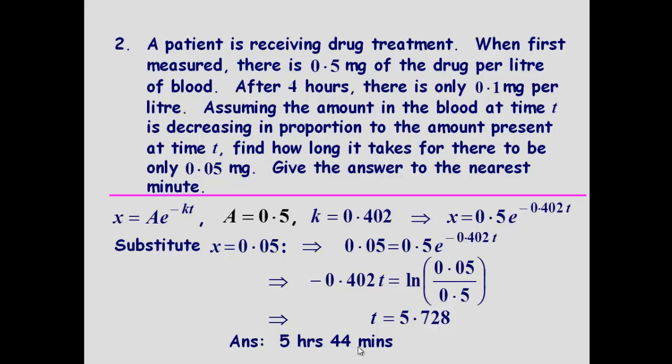If we put our x as 0.05, we get 5.728. And that's how long it will take up to the nearest minute. Be careful with that, because remember there's 60 minutes in an hour. It's very easy to treat that as 5.44. It's not. It's 5.728.